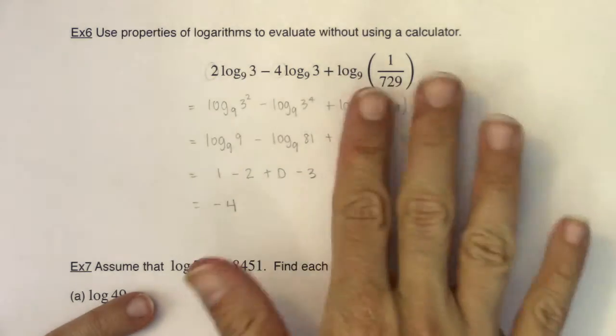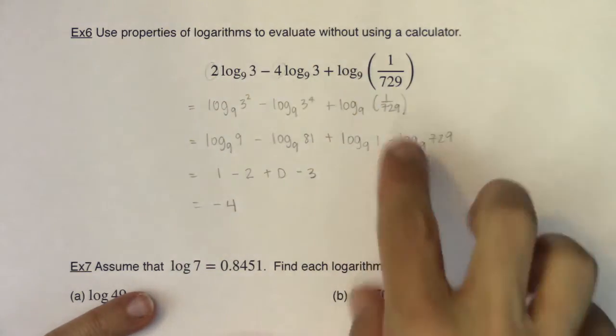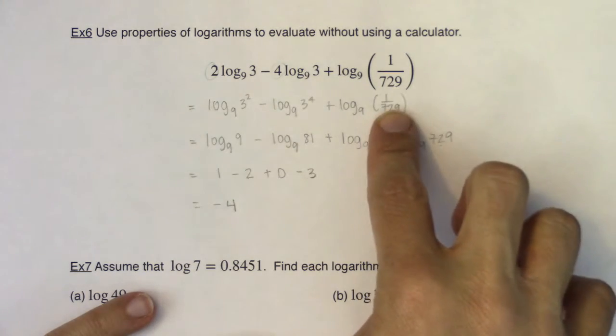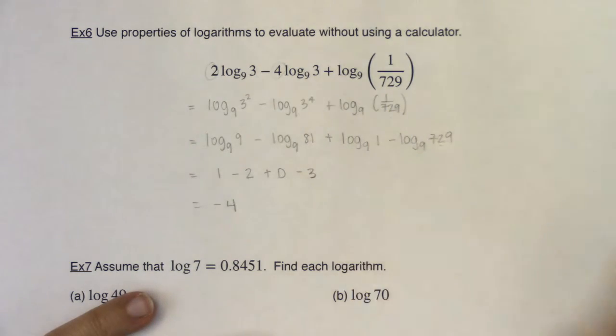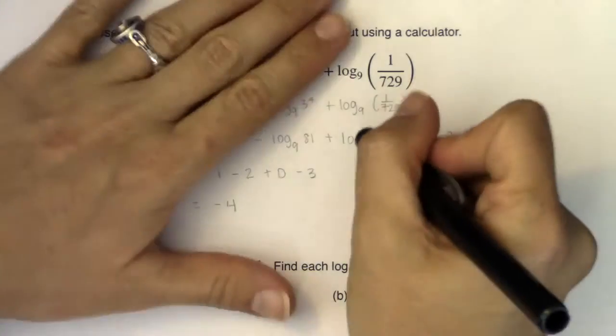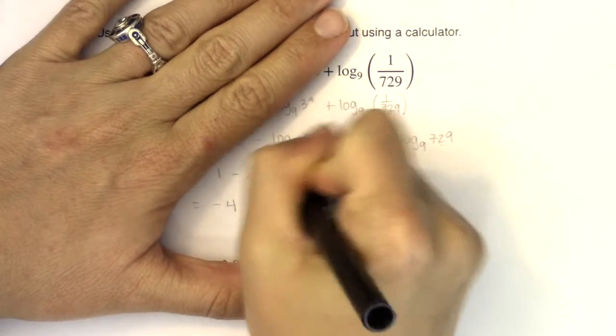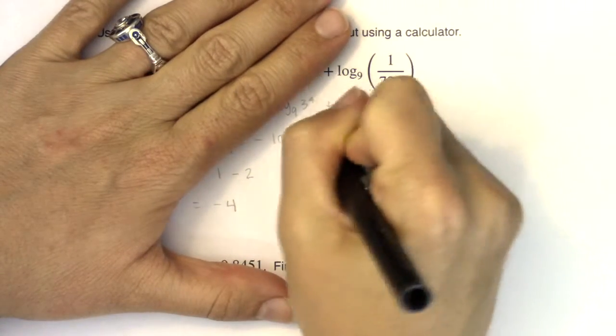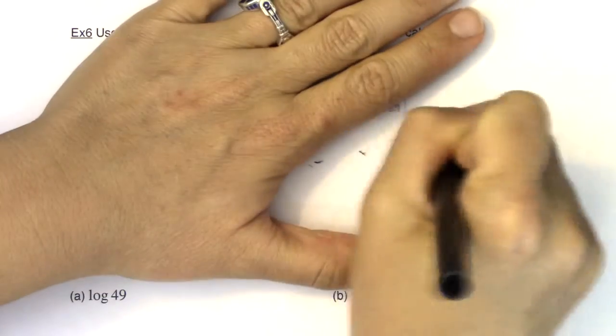And I said there were a couple of ways to do this. So let me show you a different version. So if you didn't see this as a quotient and you didn't say, well, this is log 1 minus log 729, that's no problem. Let me erase that part of it and show you an alternate version.